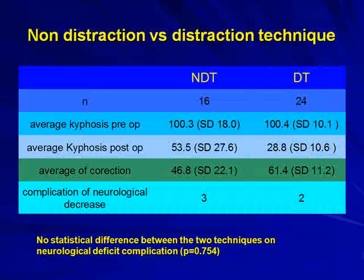My colleague Dr. Salim did a comprehensive comparative study between the shortening and distraction methods, from two years ago. The preoperative kyphosis in the distraction group was 100.4 degrees, and 100.3 degrees in the shortening group. After surgery, kyphosis was 53.5 degrees in the shortening group and 28.8 degrees in the distraction group. The correction was 46.8 degrees in the shortening and 61.4 degrees in the distraction. There were three complications in the shortening and two in the distraction, but usually after a couple of months the neurological function improved.